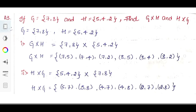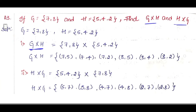See the 3rd question. They have given G = {7, 8} and H = {5, 4, 2}. They are asking us to calculate G cross H and H cross G. We already learned how to calculate these. For G cross H, I take first element of G and pair it with all elements of H. That gives ordered pairs (7, 5), (7, 4), and (7, 2).